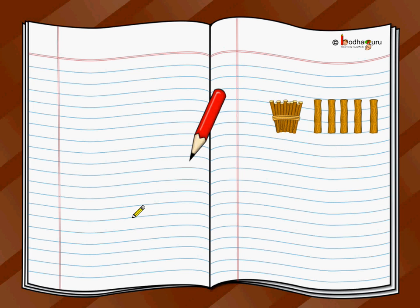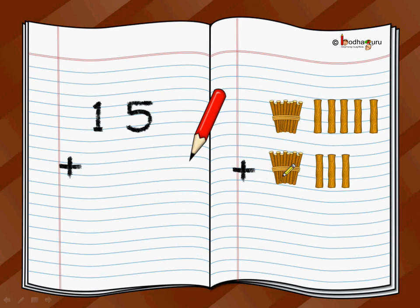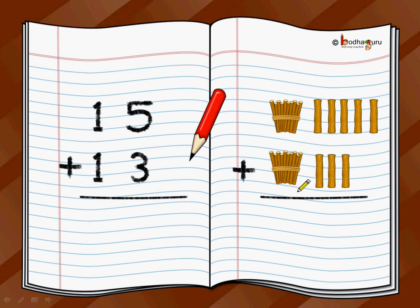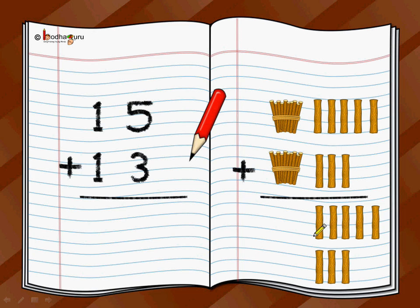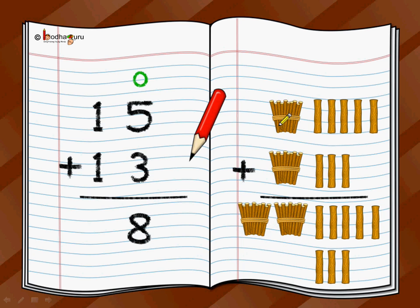Let us take another problem. I have a bundle of 10 plus 1, 2, 3, 4, 5 — that is 15 sticks — and I got 13 more sticks, which is 10, 11, 12, 13. We want to find out how many total sticks we have. We start from the ones position and add 1, 2, 3, 4, 5, 6, 7, 8. So we write down all 8 sticks. We also take the first bundle of 10 and the second bundle of 10, giving us 1 plus 1 which is 2 tens bundles.